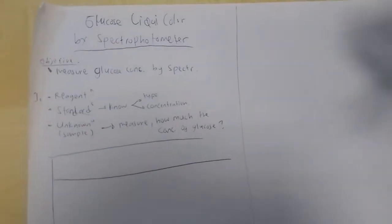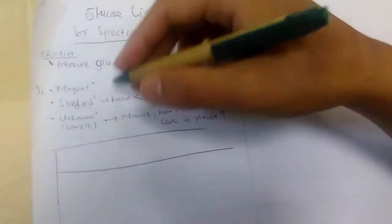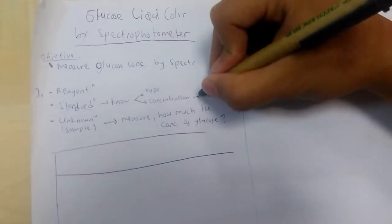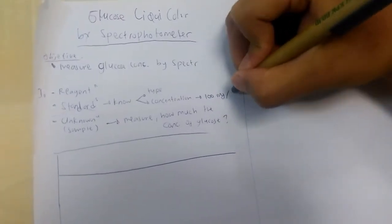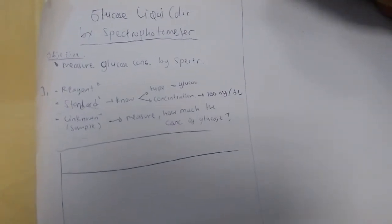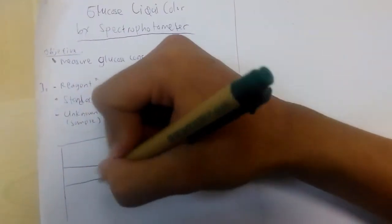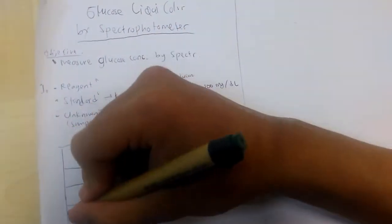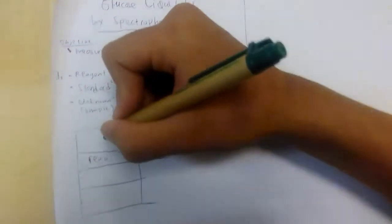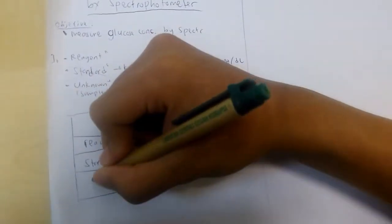First, we can make the reagent. You can usually get it from a manufacturer — they have already prepared the reagent and one standard. You can buy it, and the standard concentration we use is 100 mg/dL for glucose. We will make three subtests: the first is the reagent blank, then the standard, and then the sample.